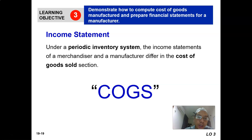If we recall the perpetual inventory system, cost of goods sold is an account which is updated every time a sales transaction happens. So there is no section on cost of goods sold in the income statement, but there is an account line of cost of goods sold. In the income statement of merchandising companies that use the periodic inventory system, there will be a section on cost of goods sold showing the beginning inventory, purchases, minus the ending inventory — giving the cost of goods sold. The information differs between manufacturer and merchandiser.